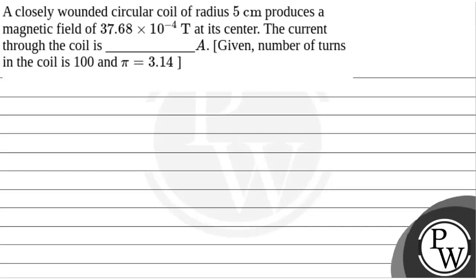Hello, let's read the question. A closely bounded circular coil of radius 5 cm produces a magnetic field of 37.68 × 10^-4 tesla at its center. The current through the coil is dash ampere. Given number of turns in the coil is 100 and π = 3.14.